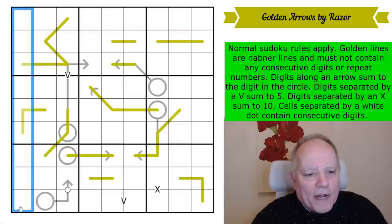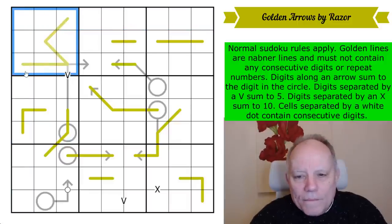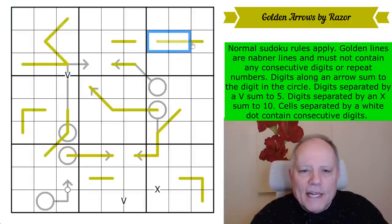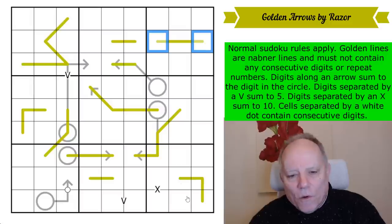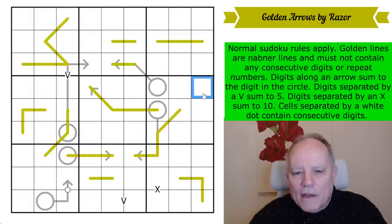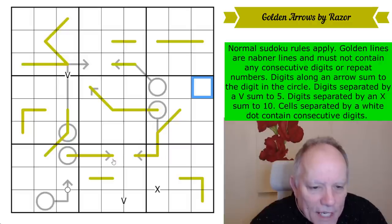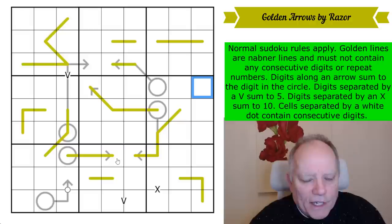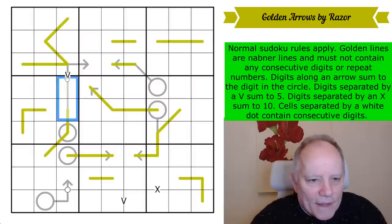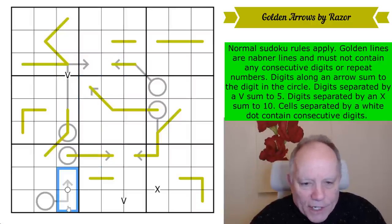So let's do the rules. Normal Sudoku rules apply - one to nine in every row, every column, and every three by three box. Golden lines are NABNA lines and they mustn't contain consecutive digits anywhere on them. It's not just neighboring digits, but even those two can't be consecutive or those two. No NABNA line can have any two consecutive digits anywhere on it, and they have no repeat digits obviously either. Digits on an arrow sum to the digit in the circle.